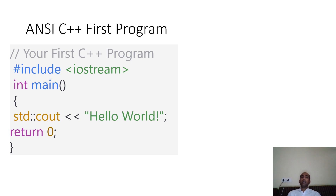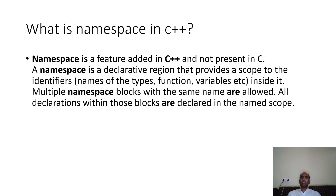The question arises: what is std::? This 'std' is known as a namespace. Namespace is a feature added in C++ that was not present in C. A namespace is a declarative region that provides a scope to identifiers like names of types, functions, and variables inside it. Inside a namespace, we can define multiple functions, classes, variables, etc. Multiple namespace blocks with the same name are allowed, and all declarations within those blocks are declared in the same namespace.